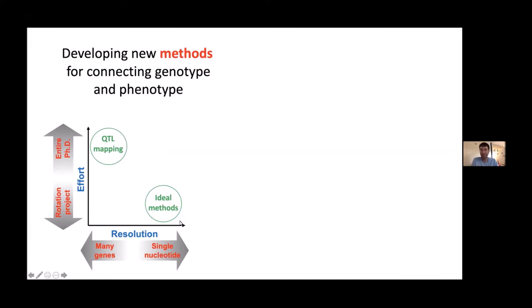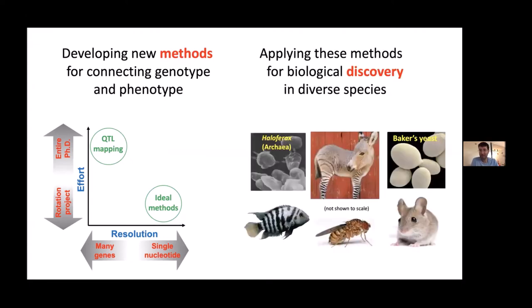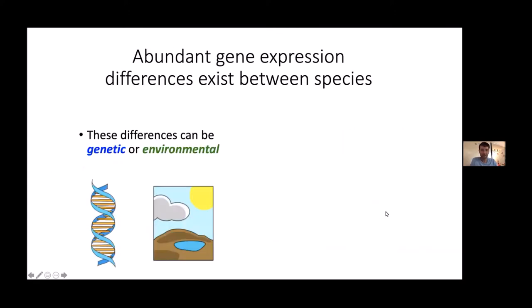Once we've developed a new method, we want to apply it to lots of interesting phenotypes across the tree of life. We try to apply them broadly to organisms ranging in size from tiny little prokaryotes all the way up to these cute but rather large and difficult to work with zebra-donkey hybrids called zonkeys.